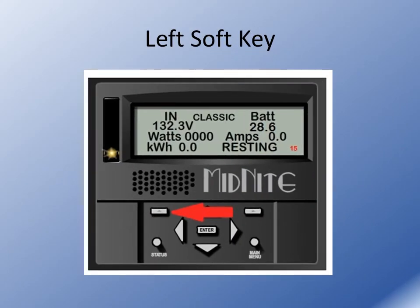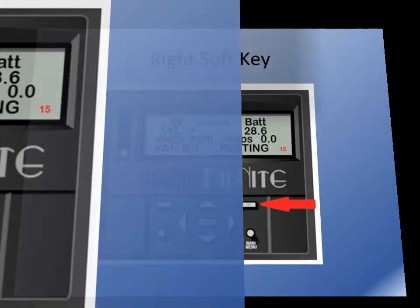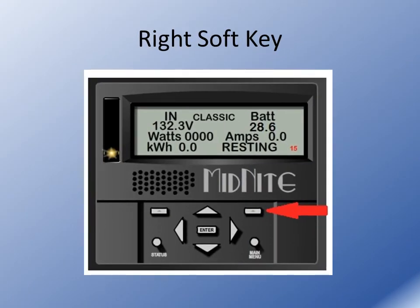Left soft key: lots of times in the menus you'll see a word above that soft key, and that soft key is used to access the menu for that word. The right soft key works the same way — in many menus you may see volts, time, or graphing, for instance. That right soft key will take you there and enter that second menu.